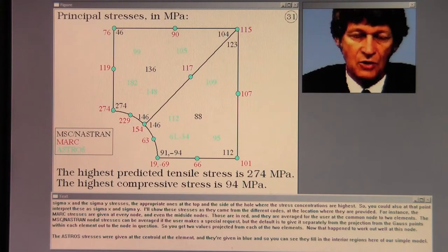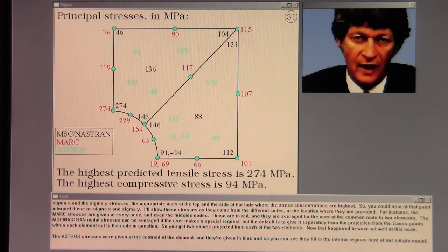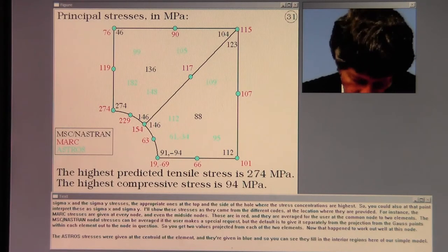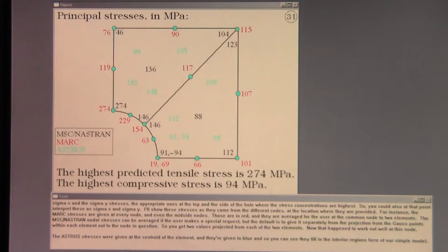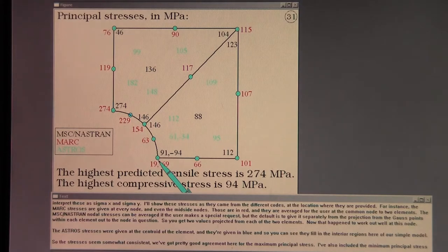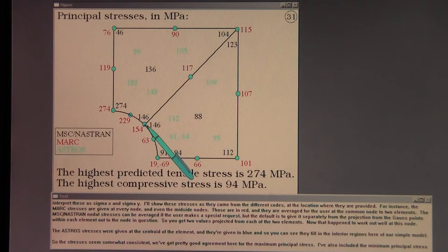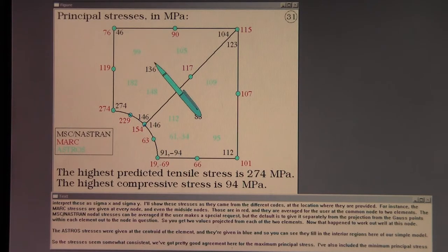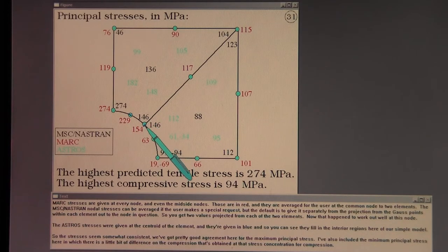I'll show these stresses as they came from the different codes at the location where they are provided. For instance the MARC stresses are given at every node and even the mid-side nodes and those are in red. And they are averaged for the user at the common node to two elements. The MSC Nastran nodal stresses can be averaged if the user makes a special request but the default is to give it separately from the projection from the Gauss points within each element out to the node in question. So you get two values projected from each of the two elements. Now that happened to work out well at this node.